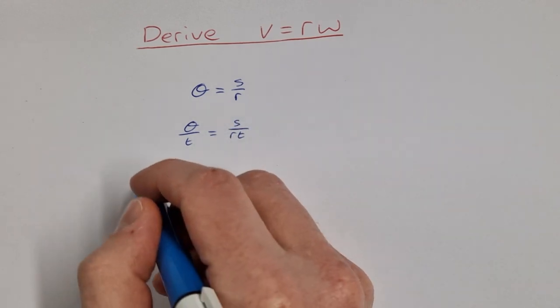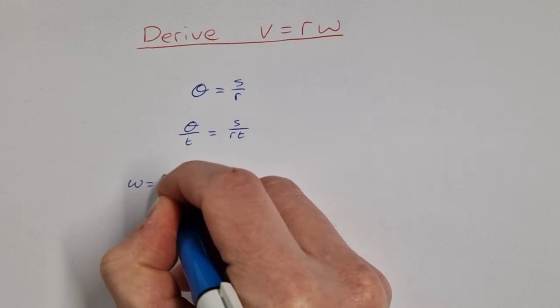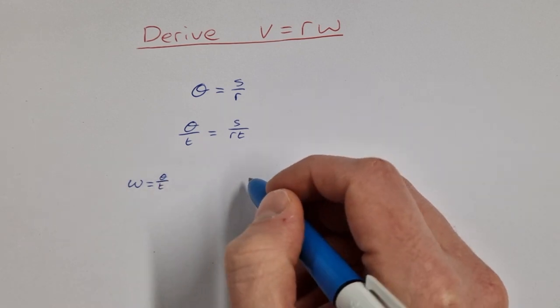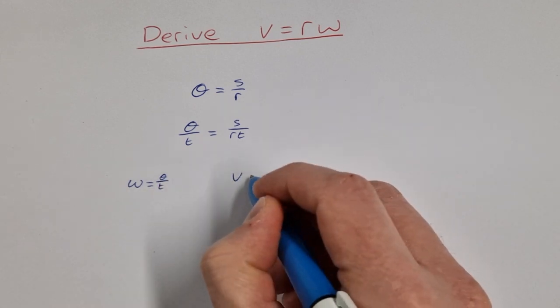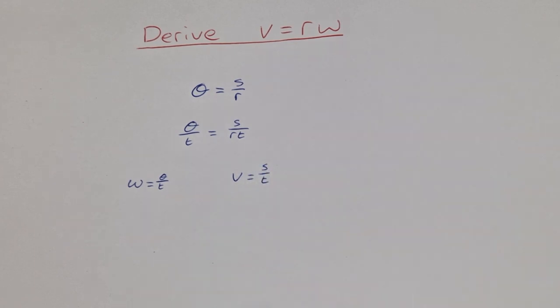Now we know that omega the angular velocity is equal to the angle theta over time, that's the definition of angular velocity, and we also know that v velocity is equal to distance over time. So I can substitute in